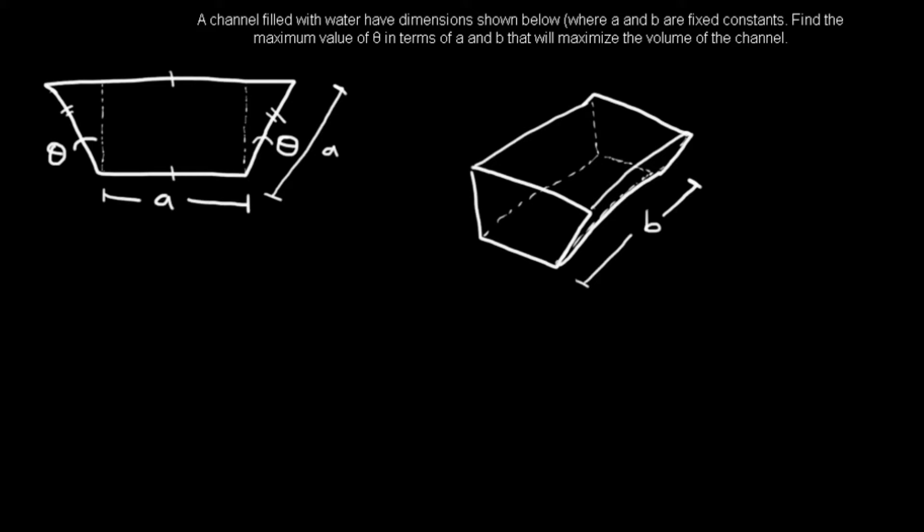As you can see from the information given, we have a cross section that has a couple dimensions labeled — it's got theta, it's got A, and then the depth of it is B. These are unknowns to us, but it doesn't matter because we can still solve the problem just pretending that we know those numbers.